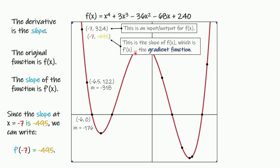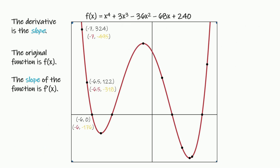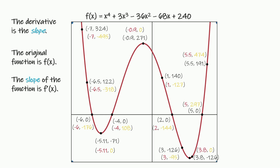That is what we're going to use to make our gradient function. Now this point is in the correct spot — negative 7, negative 495 — that would be in the third quadrant. The idea behind making a gradient function is we're going to find all of these slopes for our points, then graph them appropriately, and compare the gradient function to the original. Let's talk about this point right here — negative 511 and 71. To the left of it the slope is negative, to the right the slope is positive. So right there where it turns around — that's called a turning point — the slope is 0. All turning points have a slope of 0. We know the slope here is 0, and we know the slope here is 0 as well.